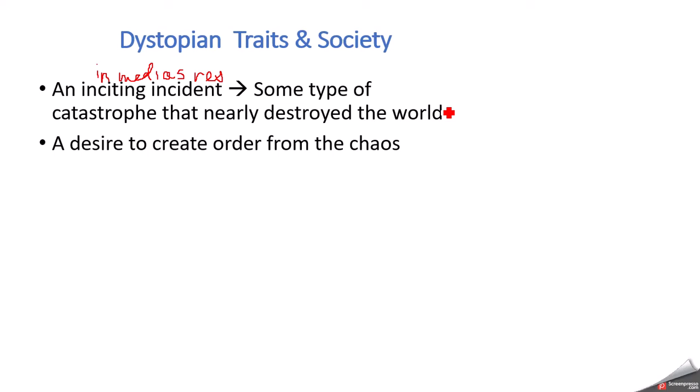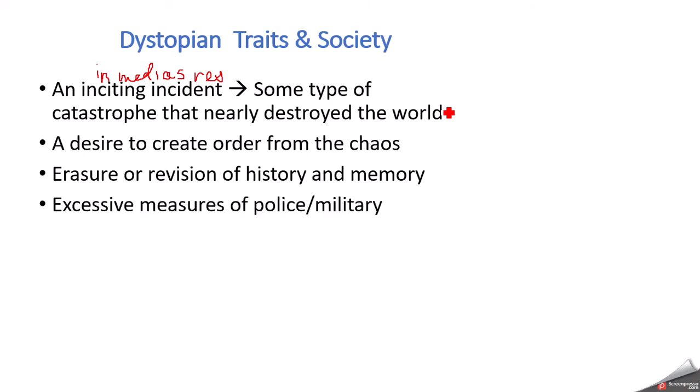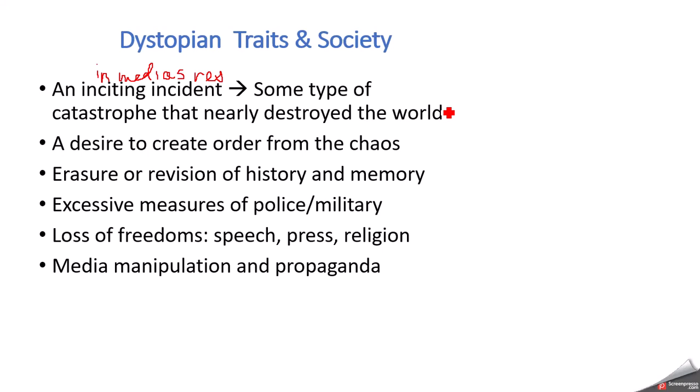This is a little bit different in Gathering Blue, but we'll talk about that in a moment. Erasure and revision of history and memory is quite important in dystopian works. Perhaps the past where people didn't rely on science is being erased — so now there's no art or culture. Or perhaps it's the opposite, as in Ayn Rand's Anthem, where society has really no science and they're living in a primitive way. Excessive police and military measures try to control the chaos, and there's a loss of freedom — freedom of press, speech, and religion do not typically exist.